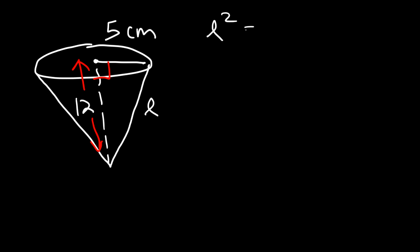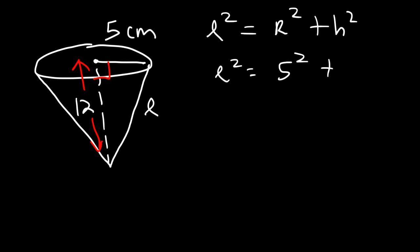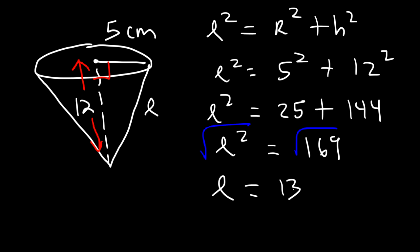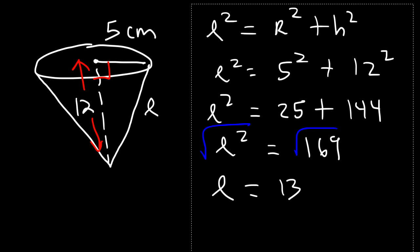Using the equation l² = r² + h², with r = 5 and h = 12: 5 squared is 25, and 12 squared is 144. Adding those gives 169. Taking the square root of both sides, the square root of l² is l, and the square root of 169 is 13. So l is 13 centimeters.